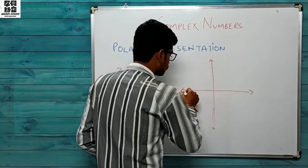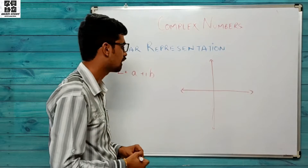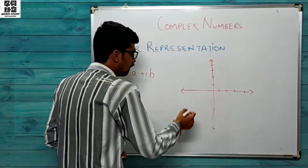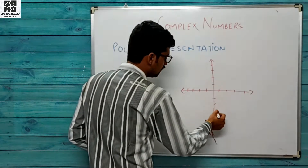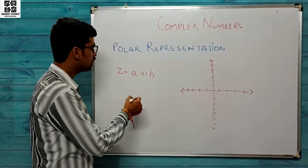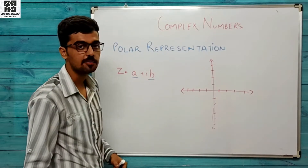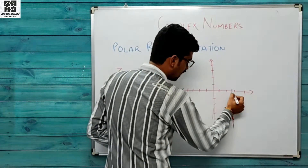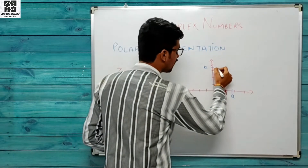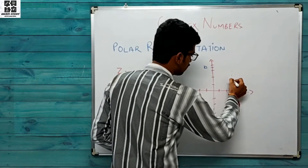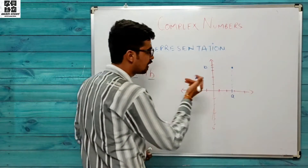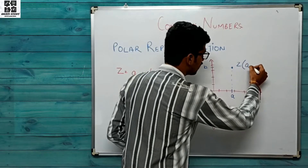Yeh ek xy plane hai — isko aap Argand plane bhi kehte hain, aap books mein Argand plane mein dekhenge. Agar humara koi bhi complex number a + ib hai, toh let us say a x-axis pe plot ho raha hai aur b y-axis pe plot ho raha hai. Is point ko humne z bol diya, aur is point ke coordinates hain (a, b).